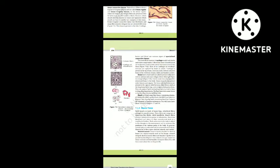The bone marrow in some bones is the site of production of blood cells. Blood is a fluid connective tissue containing plasma, red blood cells (RBC), white blood cells (WBC) and platelets. It is the main circulating fluid that helps in the transport of various substances. You will learn more about blood in chapters 17 and 18.